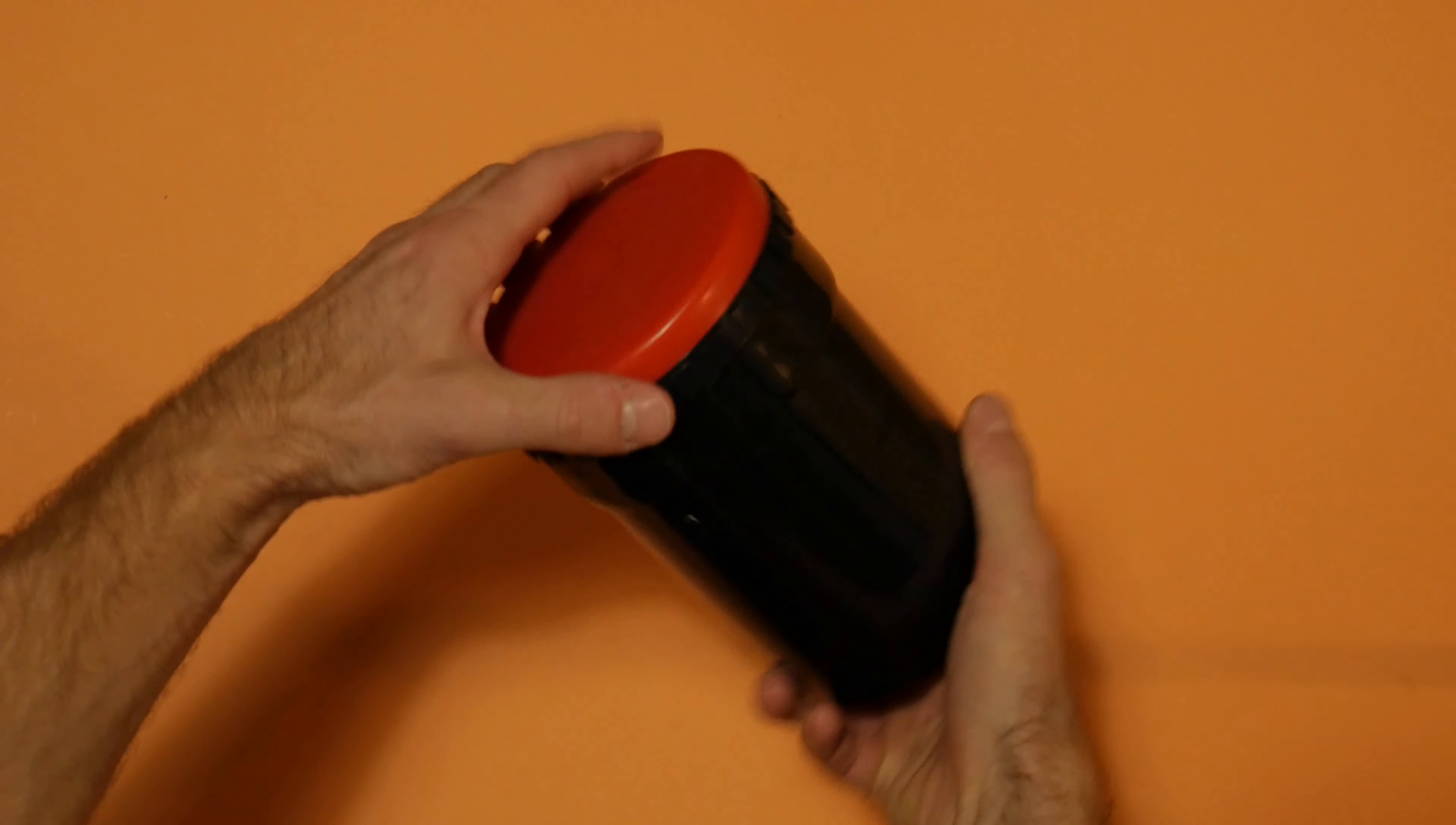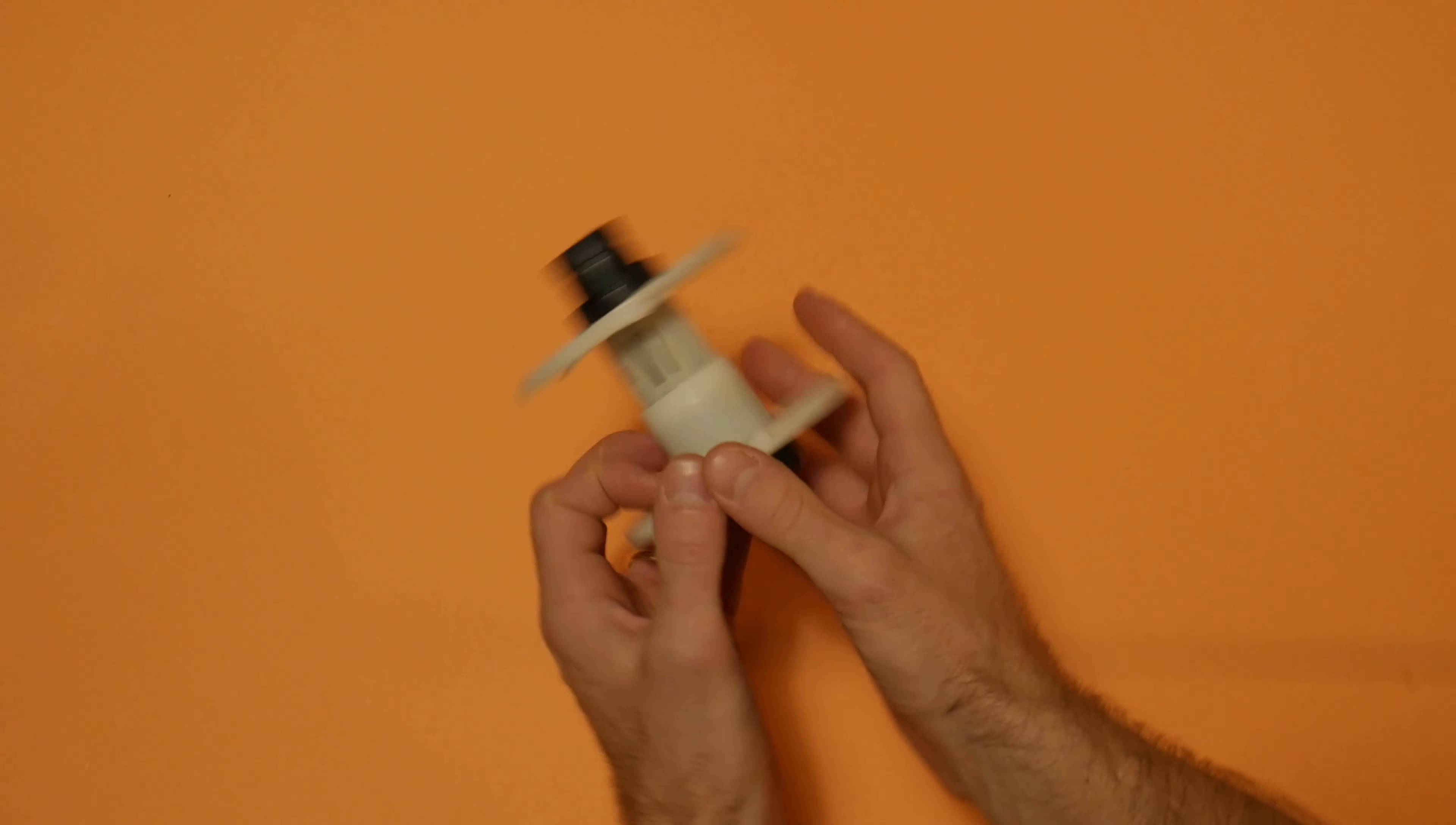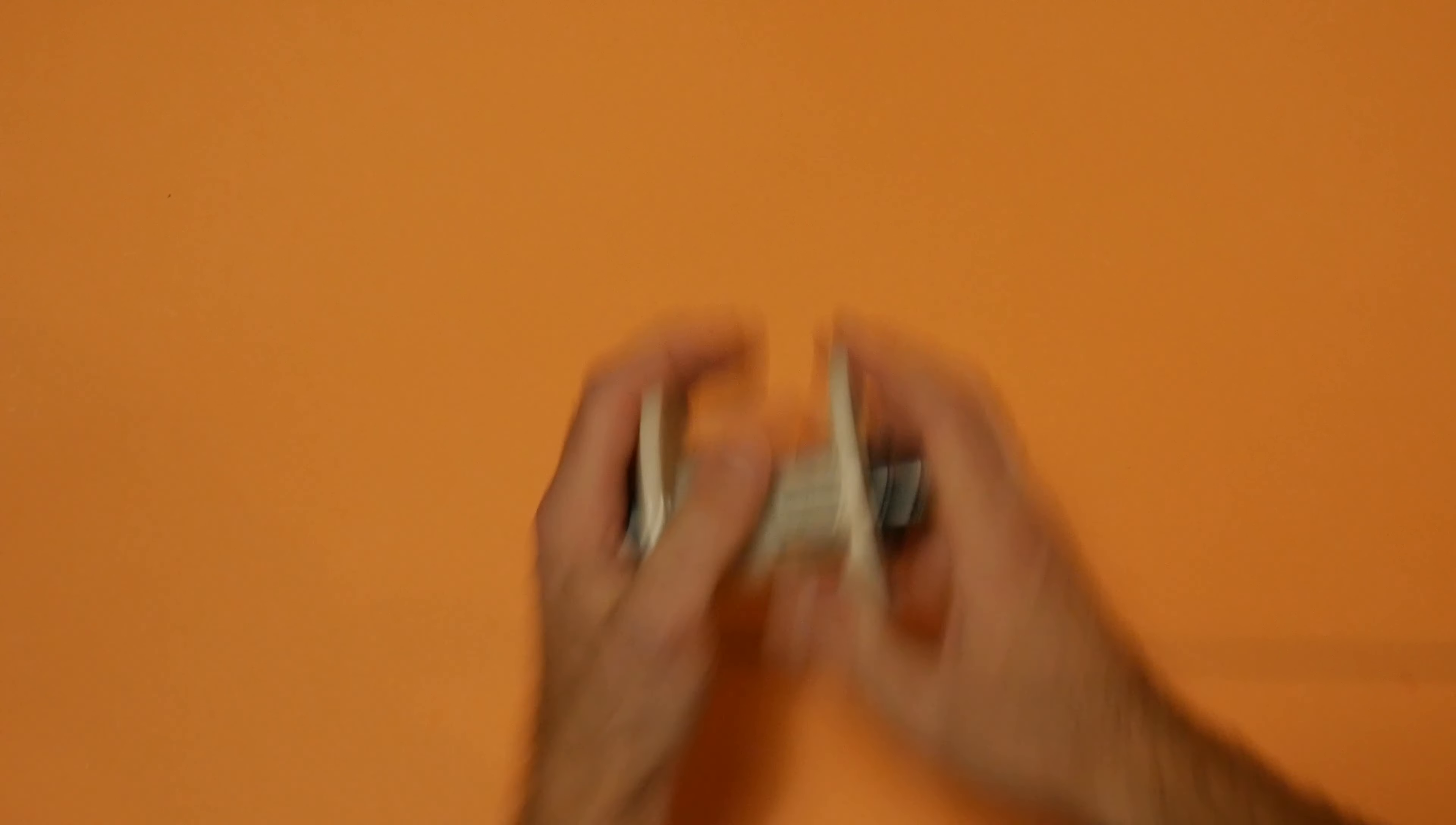You just need a few essentials to develop your film. Of course, your developing tank. I would recommend you to get a changing bag, a darkroom bag. This is where you have to put in your film. It's always a little bit difficult, especially in the dark, so you have to really get used to it.